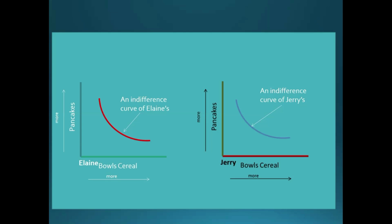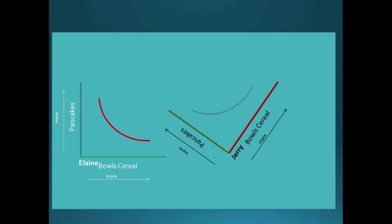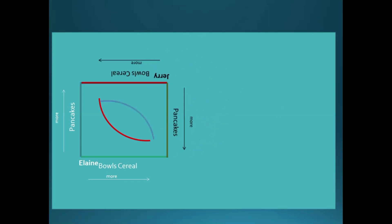But when we're looking at exchange efficiency, we want to account for scarcity in the market — that if Elaine is getting more of one good, then Jerry is necessarily getting less of that good, and vice versa. So we'd like to combine these graphs in some meaningful way. We can't superimpose them. What we do instead is take one of them — in this case Jerry's — and flip and rotate it.